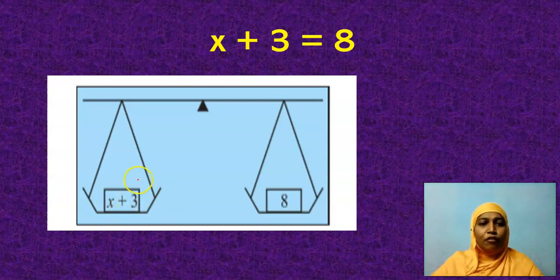I don't want this 3. I have to remove this 3. So I will subtract 3 from this side. If I do here, I should do the same here. Otherwise it will disturb the balance. So what will I get here? I will get here X.